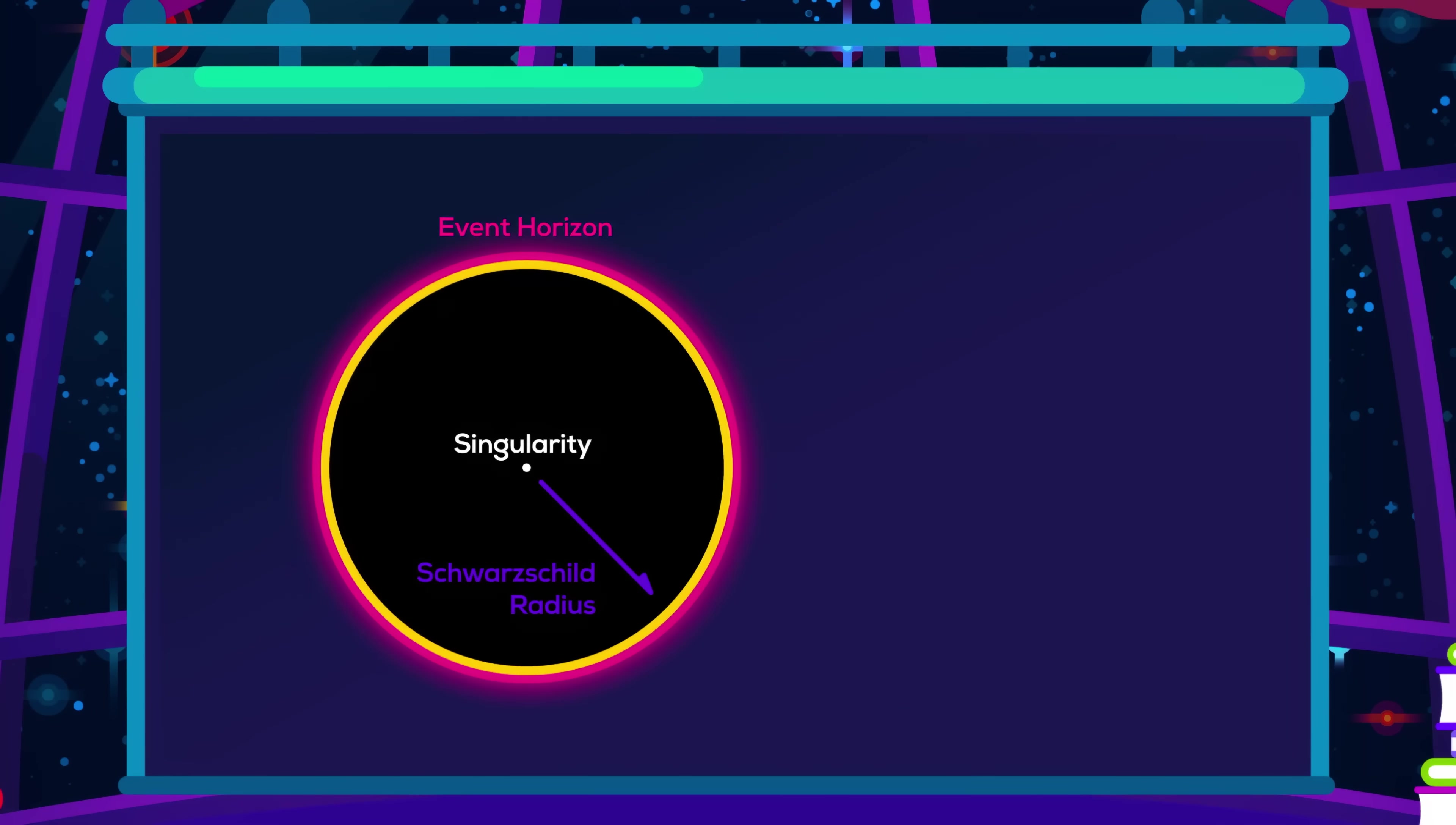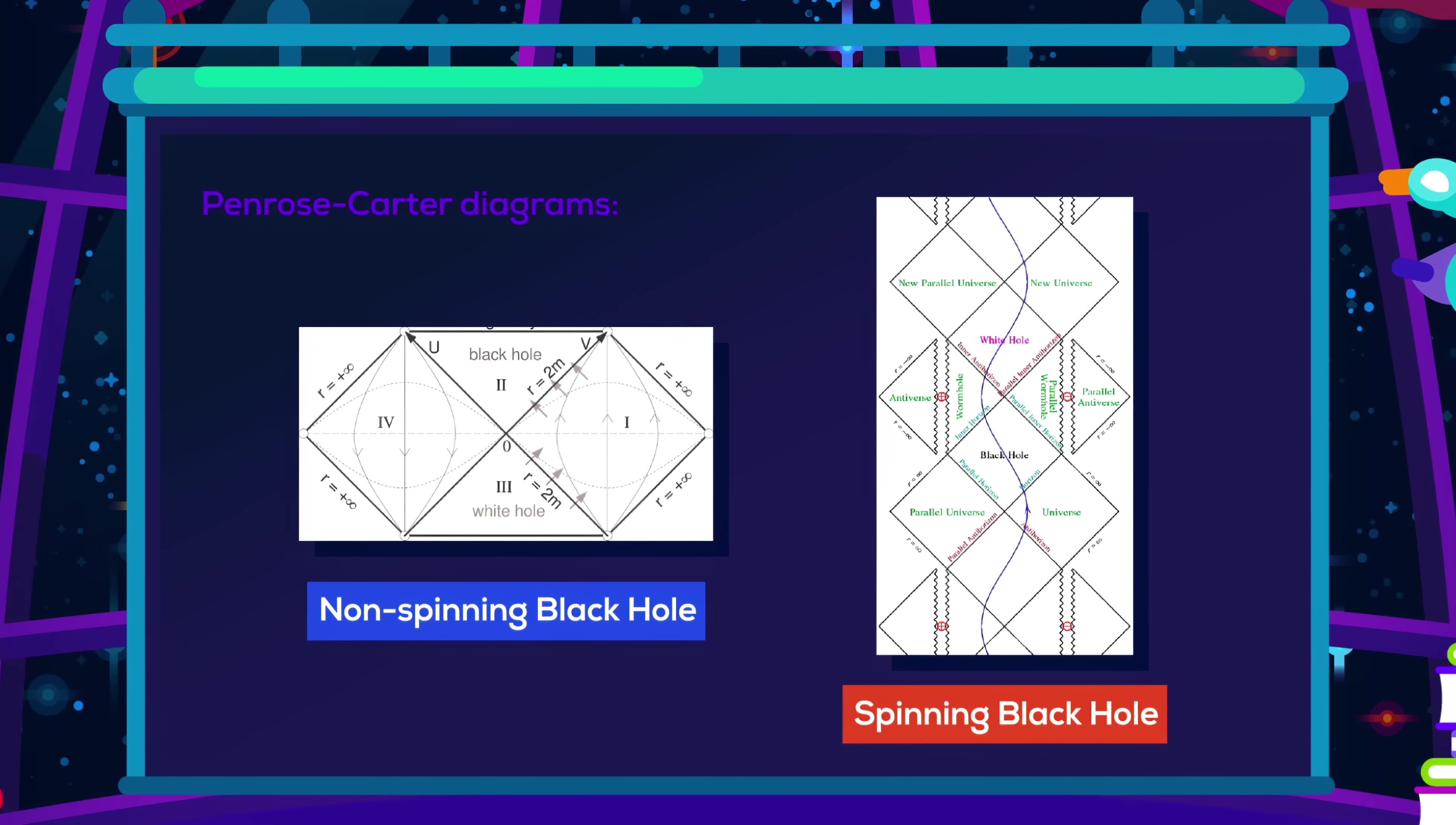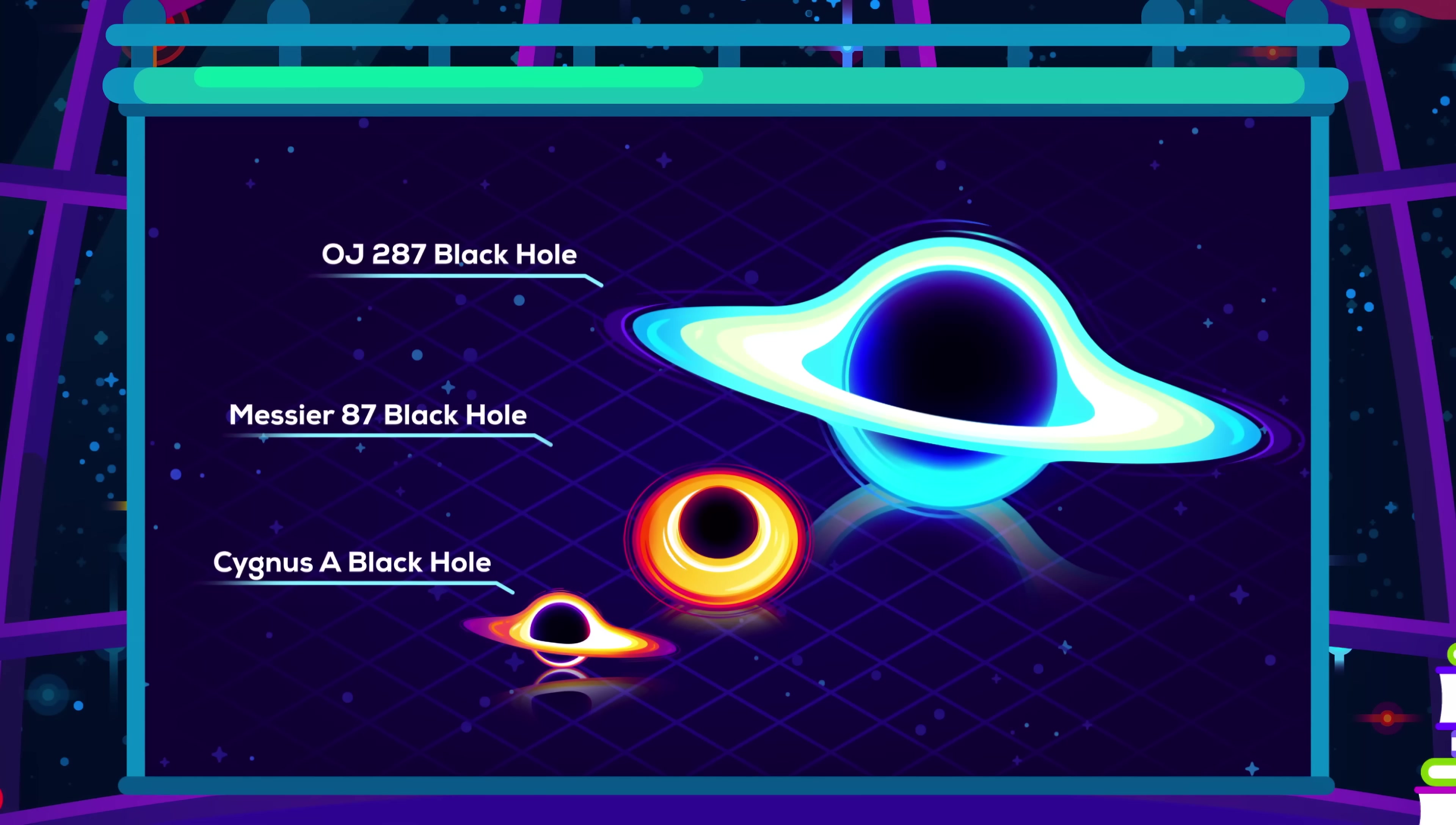For example, we calculated the radius from the mass using the Schwarzschild equation, which for the sake of simplicity assumes black holes are perfectly round and don't spin, a kind of black hole that doesn't really exist. The reality is that physics on these scales is a bit fuzzy.